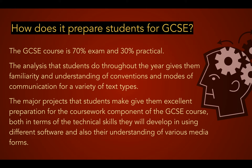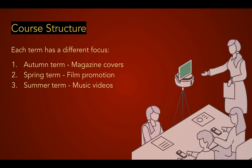Students will also gain a really good understanding of a variety of media forms — we cover at least seven or eight across the year. The course structure has a different media form for each term. In the autumn term we look at magazines. In the spring term we look at film production and film promotion. And in the summer term we focus primarily on music videos. That's not to say we don't look at a variety of other media texts throughout the year to support these core topics.